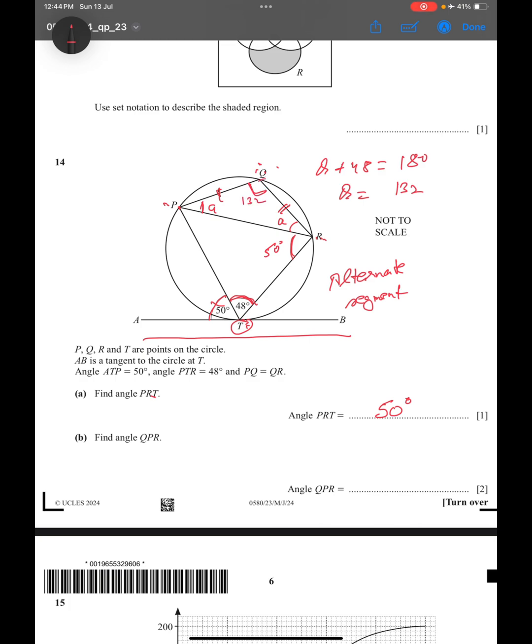We know that by the angle sum property of a triangle, the sum of all three, that is a plus a plus 132 equals 180. So this becomes 2a equals 180 minus 132. 180 minus 132 is 48, this is equal to 48.